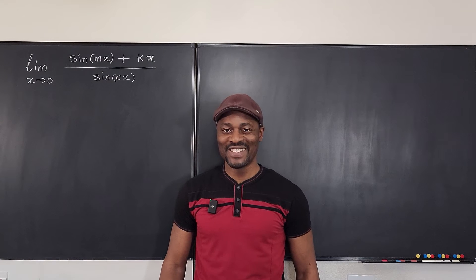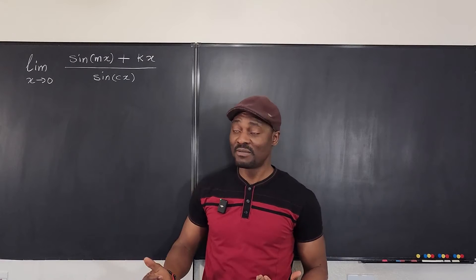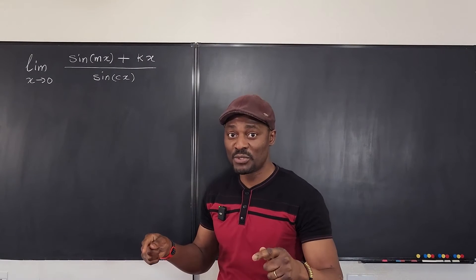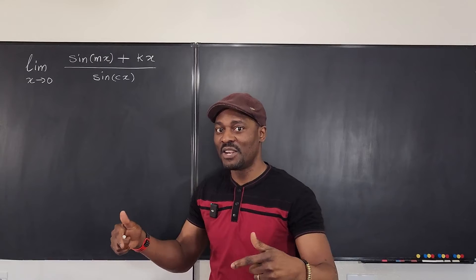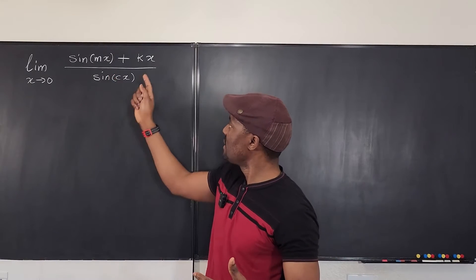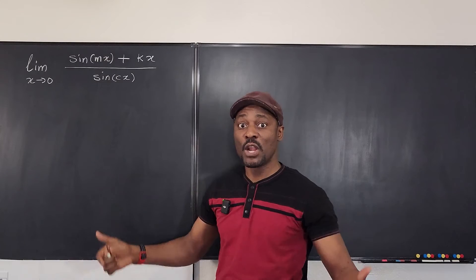Hello, welcome to another video. We're going to take the limit of this as x goes to zero. And it's unusual because here I don't have numbers to represent. I'm just representing the numbers with letters. So the constants are m, k, and c. Okay, so how would you go about this if there are no numbers?